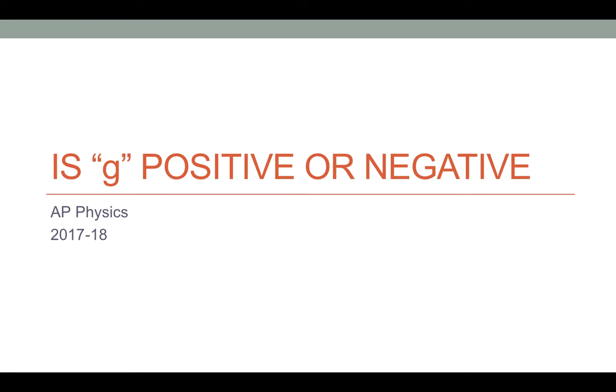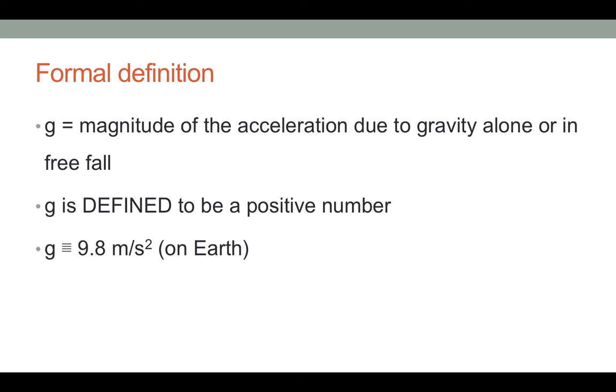One point of confusion is the plus and minus sign for g. Formally, g is simply the magnitude of the acceleration due to gravity in free fall. It is defined to be a positive number, so it is 9.8 meters per second squared on Earth.